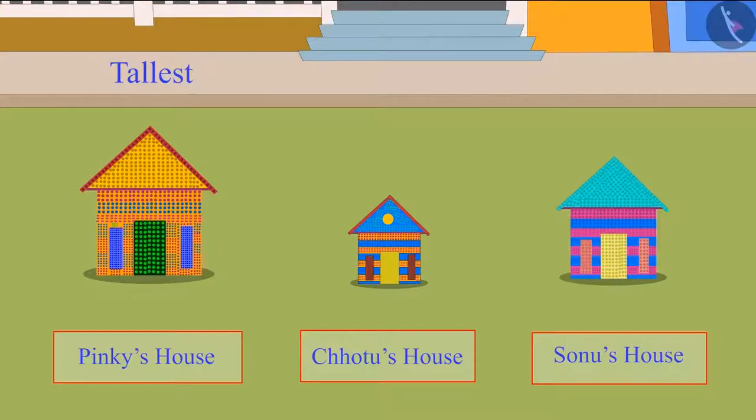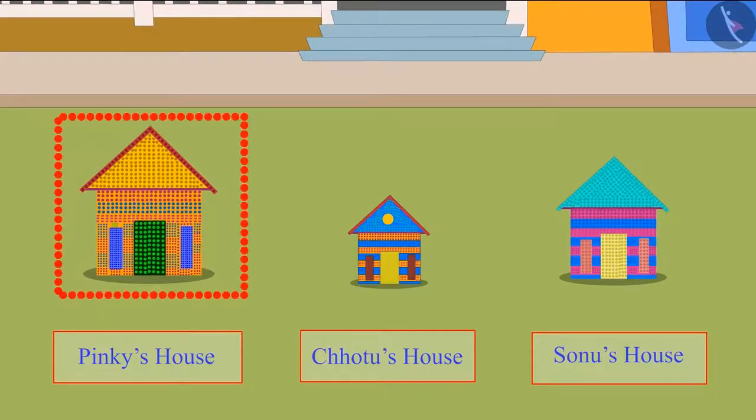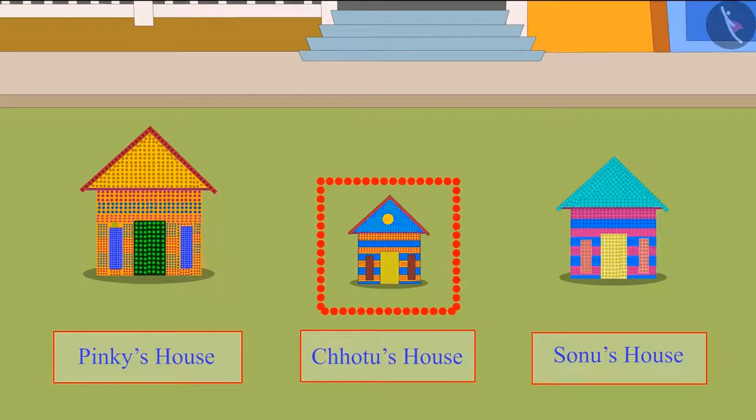Children, can you tell me whose block house is the shortest of all? Yes, Chotu's block house is the shortest of these three. Could you guess the correct answer, children? This shows that out of these three houses, Pinky's house is the tallest and Chotu's house is the shortest.